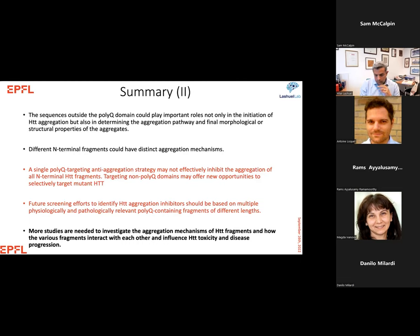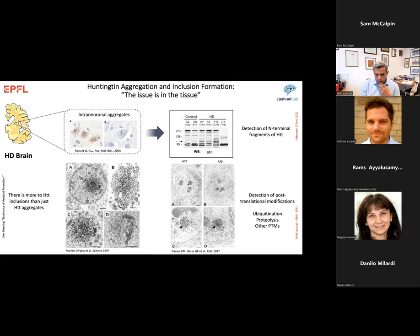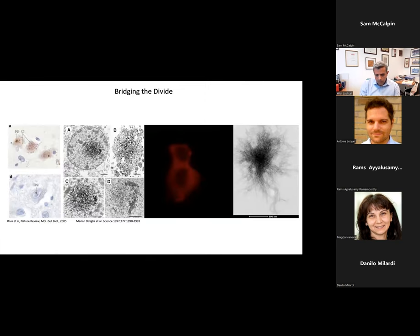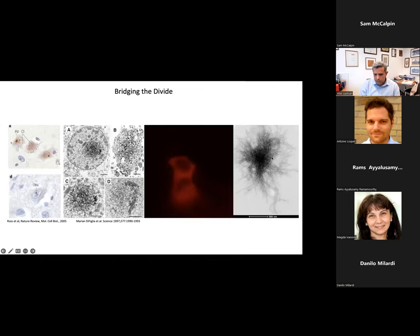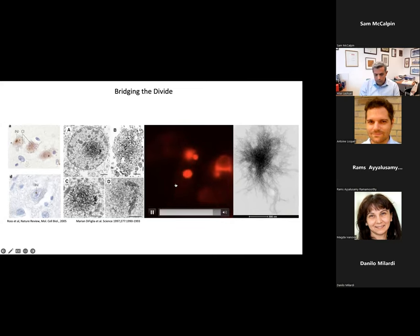We still don't understand how different fragments interact with each other and influence the mechanism of Huntington aggregation. In the last few minutes, I'd like to talk about our effort to understand how Huntington aggregates form in cells. Huntington aggregates appear fibrillar but are surrounded by different cellular structures such as mitochondria, organelles, and lipids. In vitro Huntington aggregates are mostly fibrillar; in the brain they look very different. We are trying to develop model systems that reconstitute the complexity of Huntington aggregates in the brain using cellular models. We use HEK cells because overexpression of Huntington results in predominantly cytoplasmic inclusions, and neuronal cells where overexpression results predominantly in nuclear inclusions.